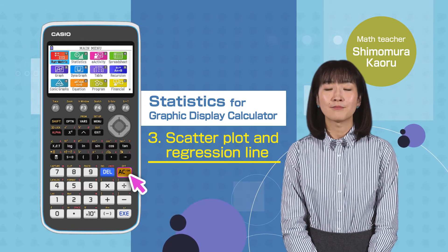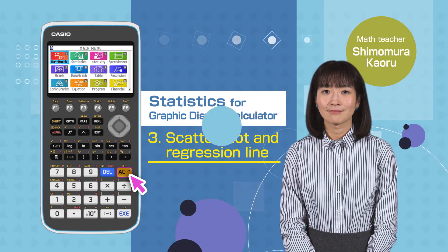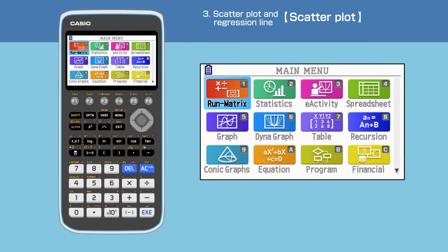Switch on your calculator by pressing the AC button. Press the menu button to open the main menu, then move the cursor or press 2 to choose the statistics function.